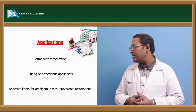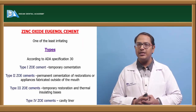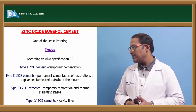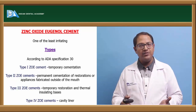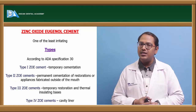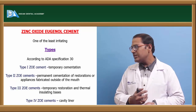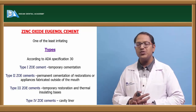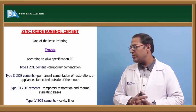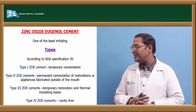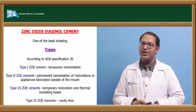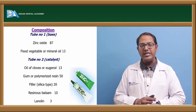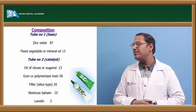Zinc oxide eugenol cement is a temporary, passive cement — one of the least irritant cements to the pulp — but it lacks the strength of permanent cements. According to ADA specification number 30, it is classified into: Type 1 for temporary restoration, Type 2 for permanent cementation or appliances outside the mouth, Type 3 for temporary restoration and thermal insulating bases, and Type 4 as cavity liners for conservative procedures.